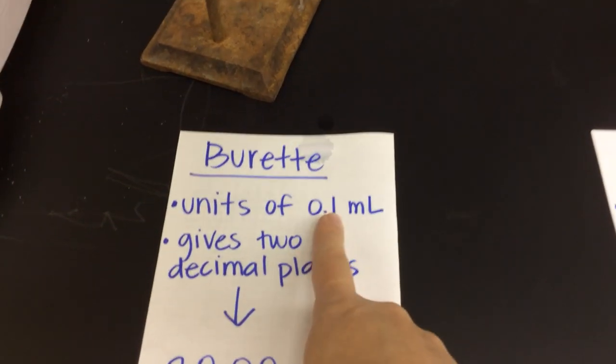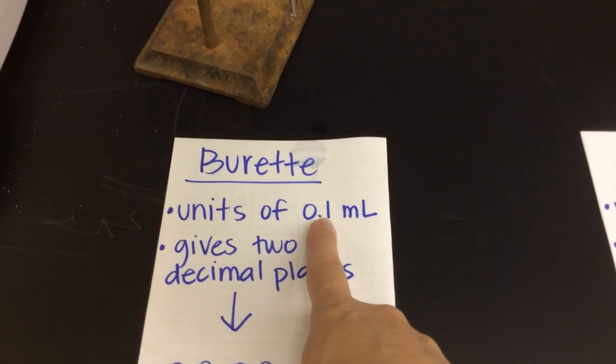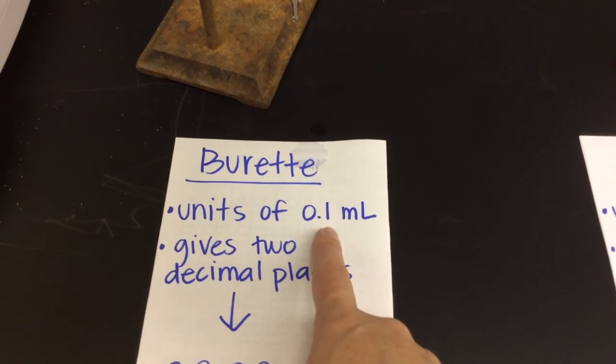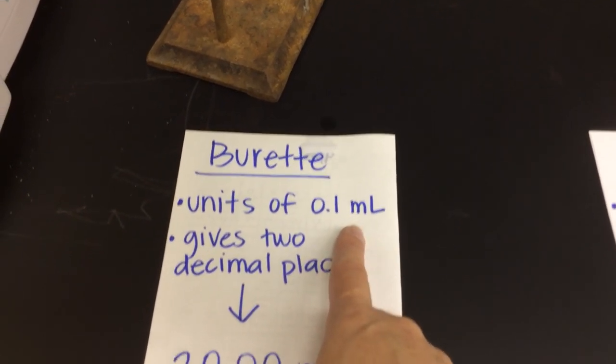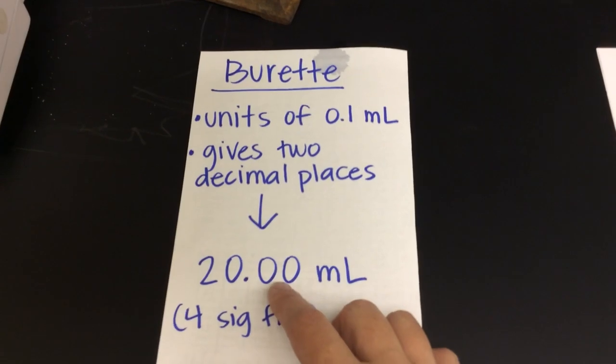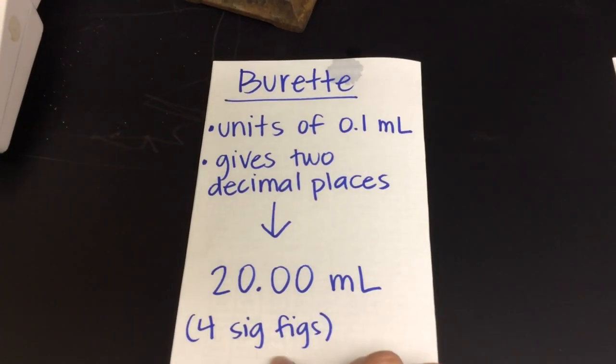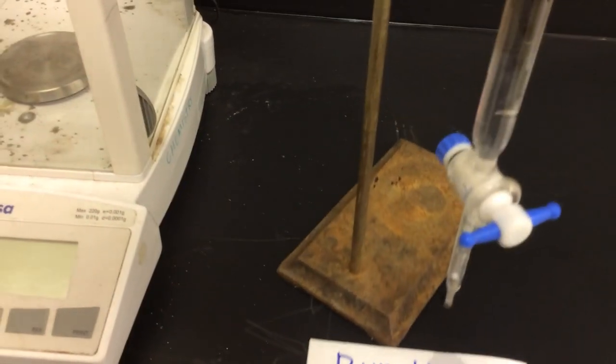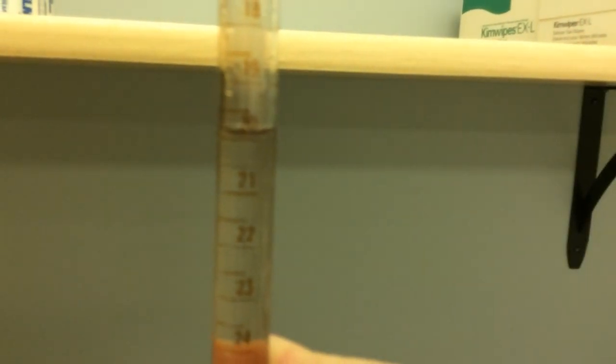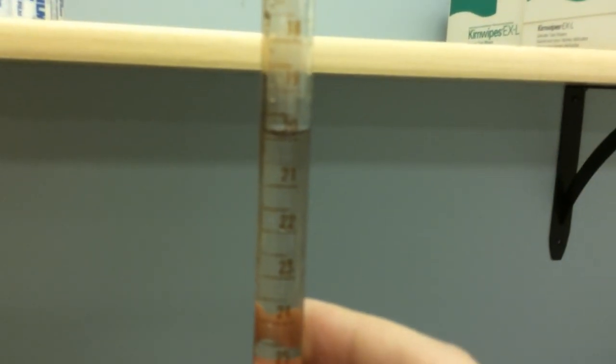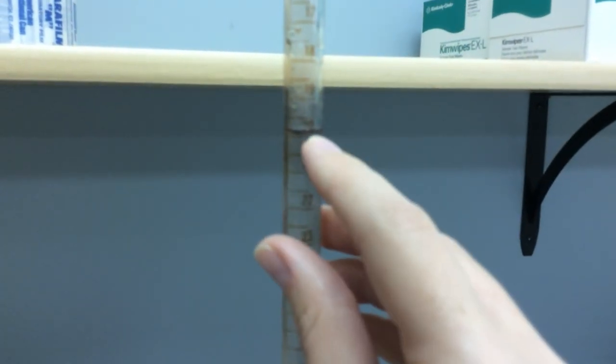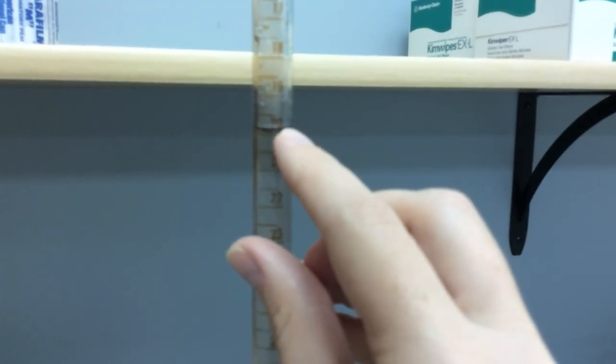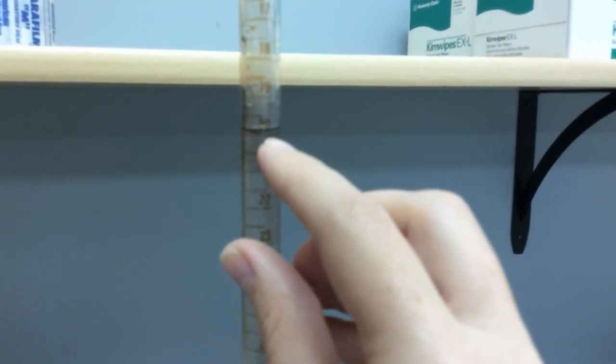So if my units are in 0.1's and I know it's directly on 20.0, when I approximate the digit right after that, that's going to give me a total of two total decimal places, or in other words, four significant figures. So this volume of 20 using the burette is an accurate measurement. It's one of my best lab tools for measuring volume. Right on the line, right there, 20.00 milliliters.